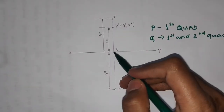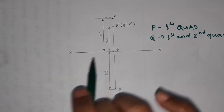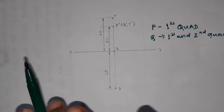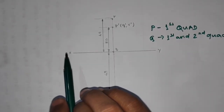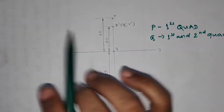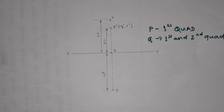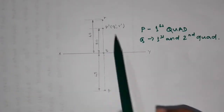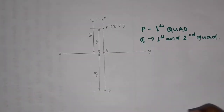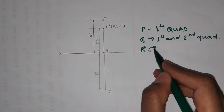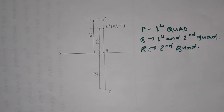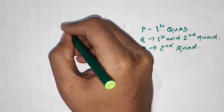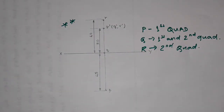Now for point R: its front view is above the XY line, so point R is above HP. Its top view is also above the XY line, meaning the horizontal plane is above the XY line — which applies to the first and second quadrant. Since both the front view and top view of R are above the XY line, point R is in the second quadrant. This was one of the very important types of problems in engineering drawing. We now move to the next problem.